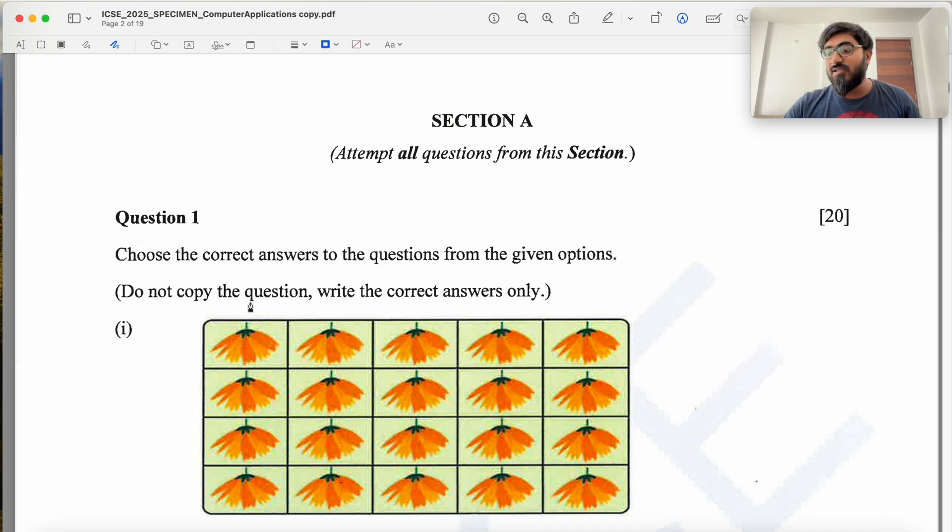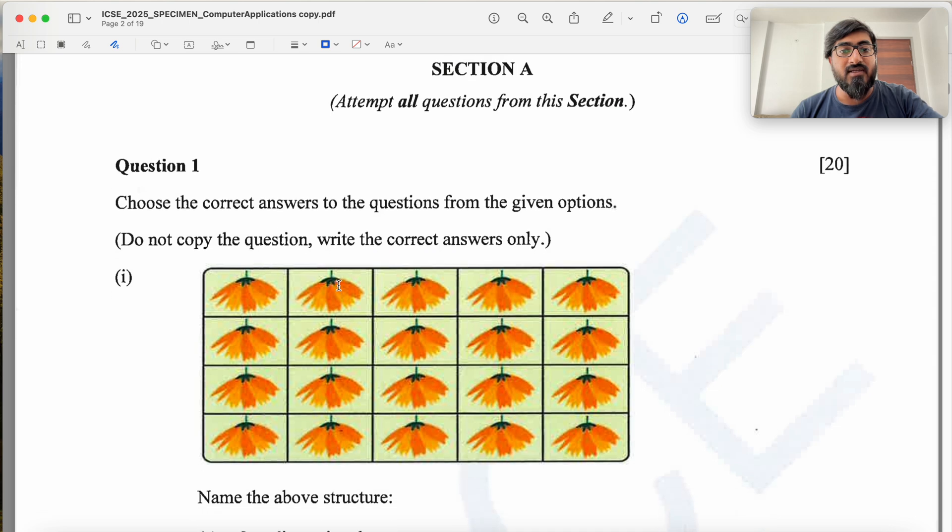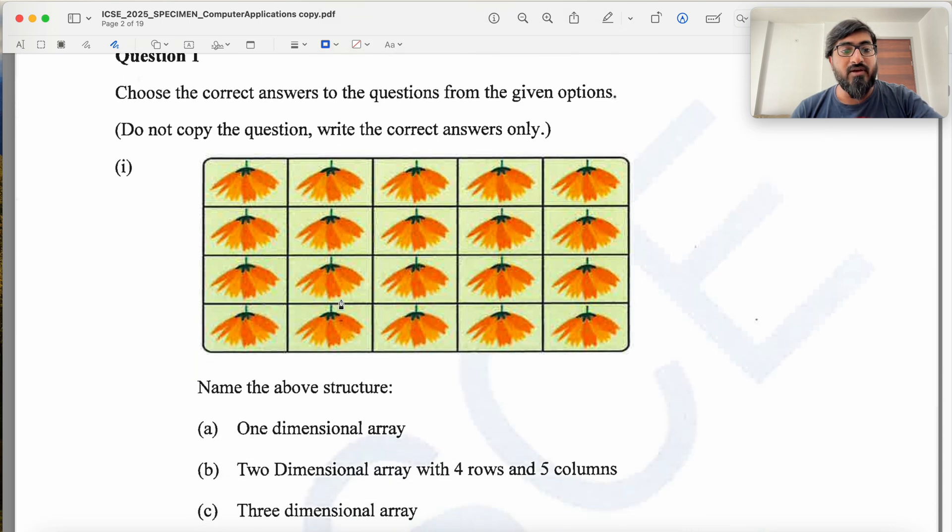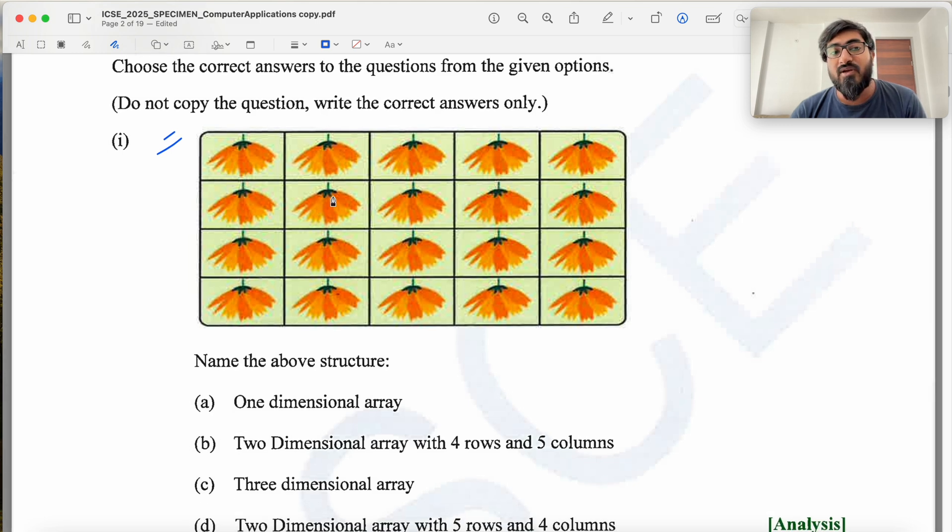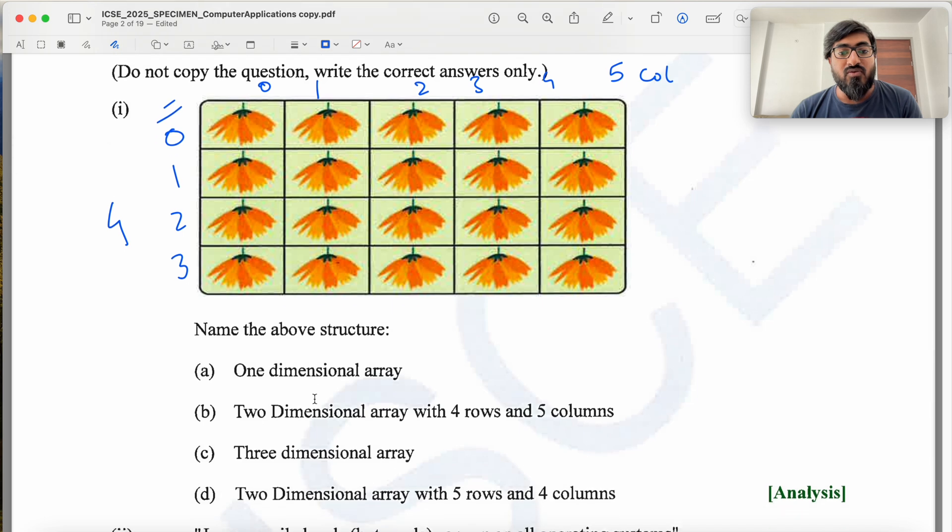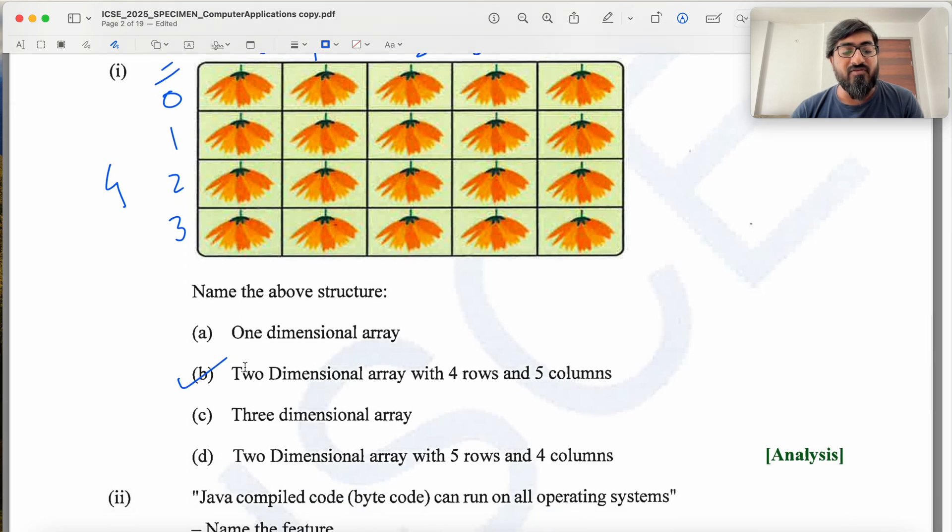So this is question one and you have to choose the correct answers from the given options. Question one, you are given this image - name the above structure. So this represents a 2D array. This is row 0, 1, 2, 3 and 4 rows, and column 0, 1, 2, 3, 4 - five columns. So this is a two dimensional array with four rows and five columns.